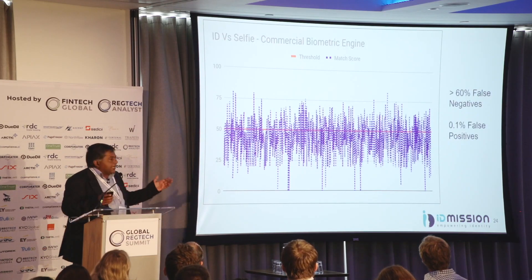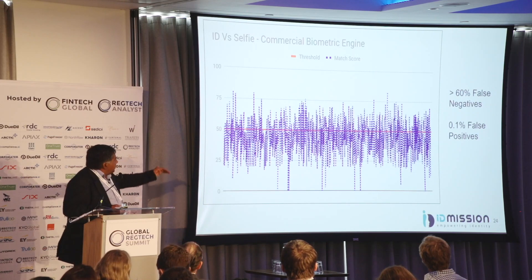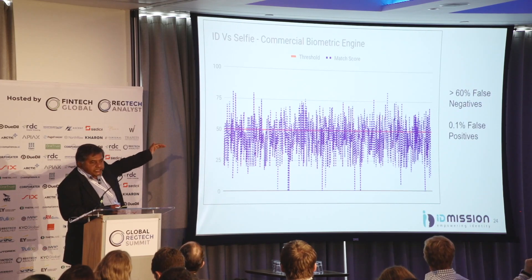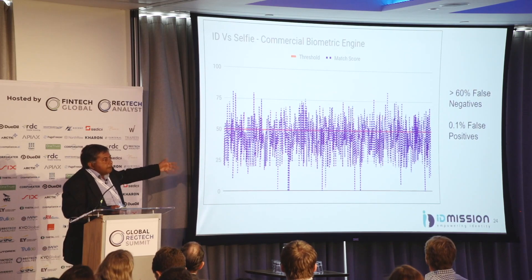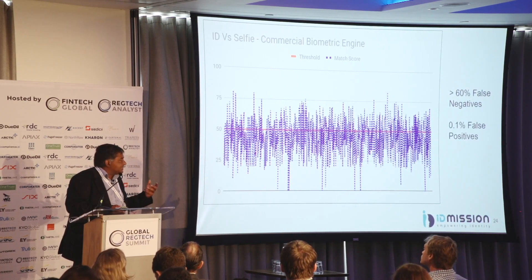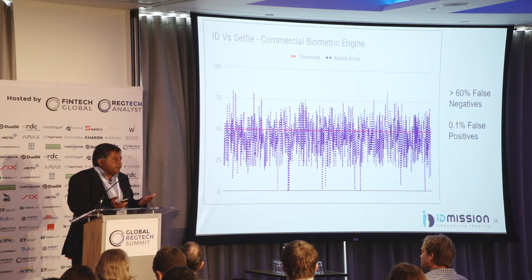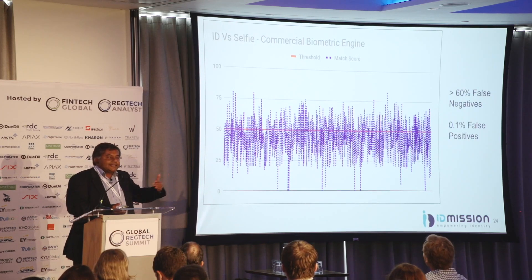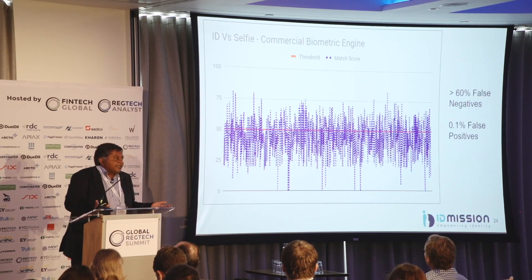We took a thousand IDs and selfie pairs and ran them through a commercial biometric engine. The red line indicates the level above which the machine would tell you it's a positive match. All of these should have been positive matches, but over 60% of them failed because the photo on the ID was not easily visible to the machine — the machine is expecting two clean photographs. That ends up rejecting 60% of customers trying to sign up for an account digitally at home, which is not an acceptable experience at all.